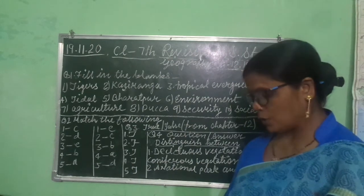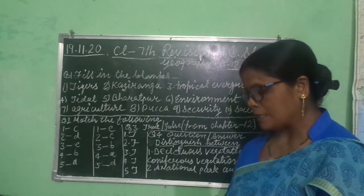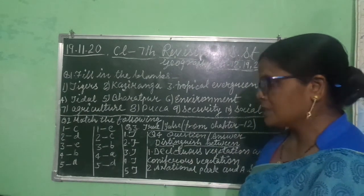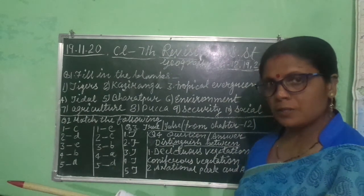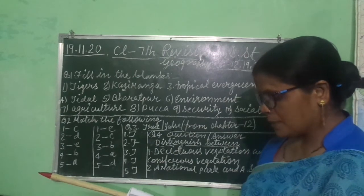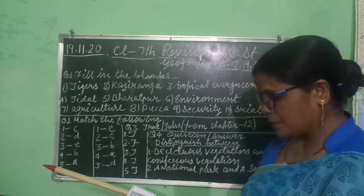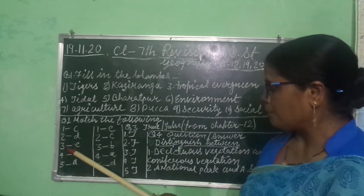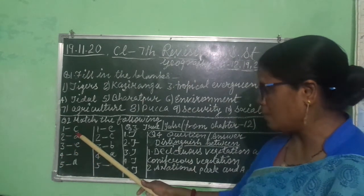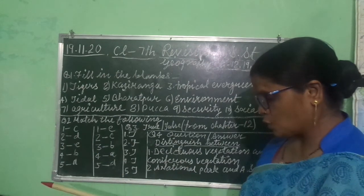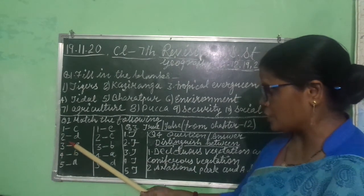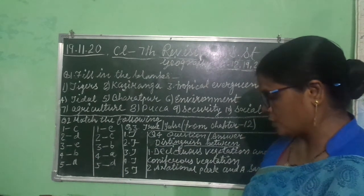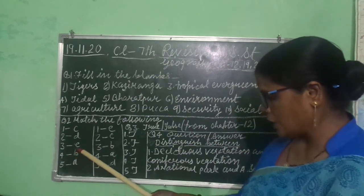Now match the following for chapter 19. Column A matched with column B. Tropical evergreen rainforest matches with C, that is pine. Second, monsoon forest matches with D, that is bamboo. Third, thorn forest matches with E, that is kikar.